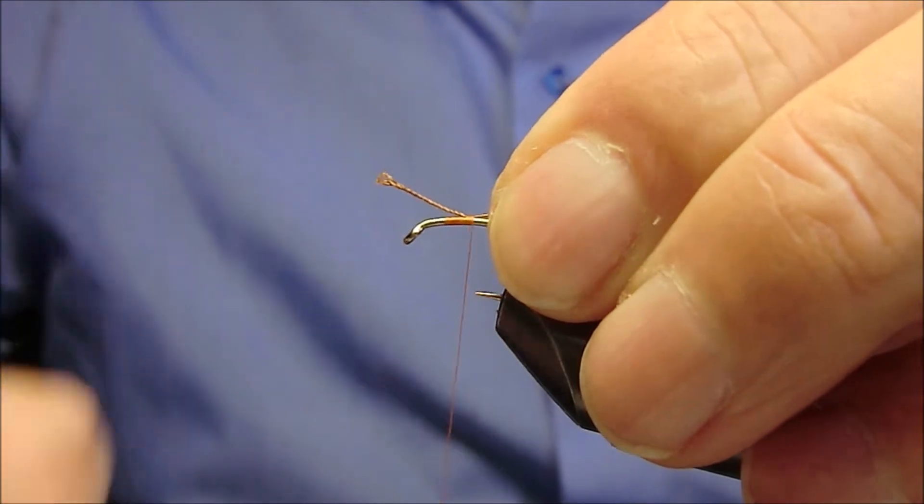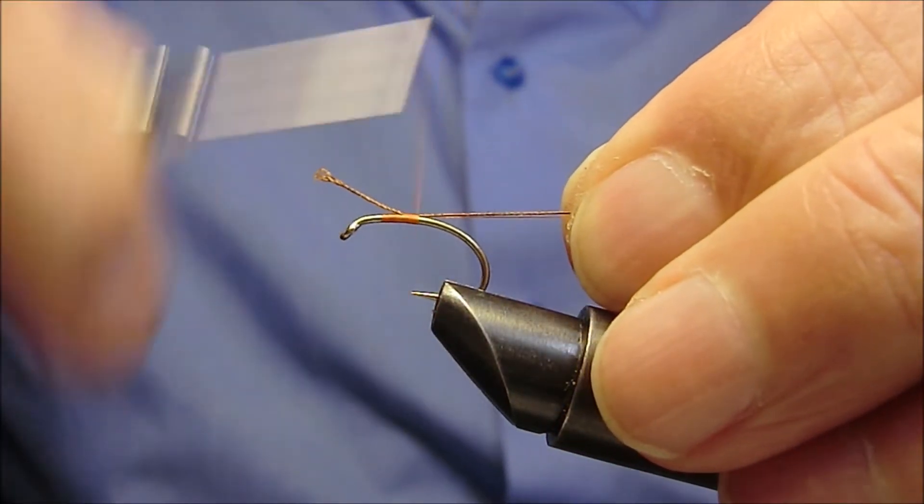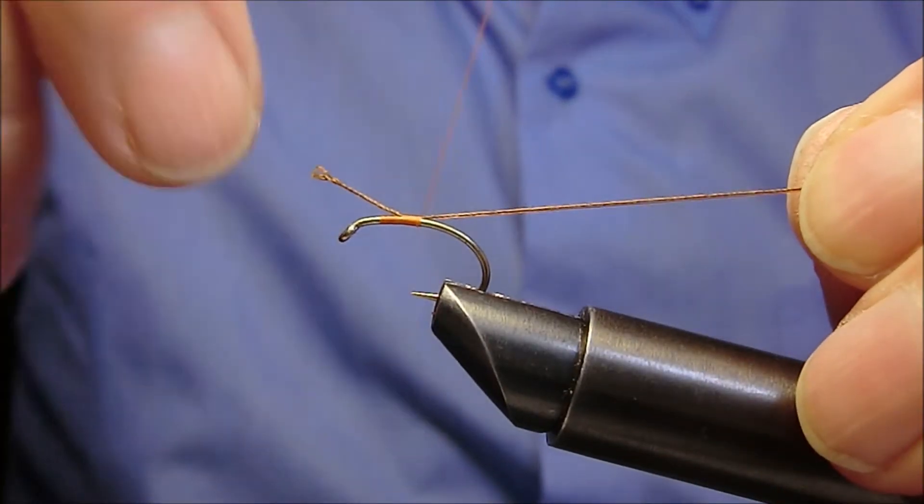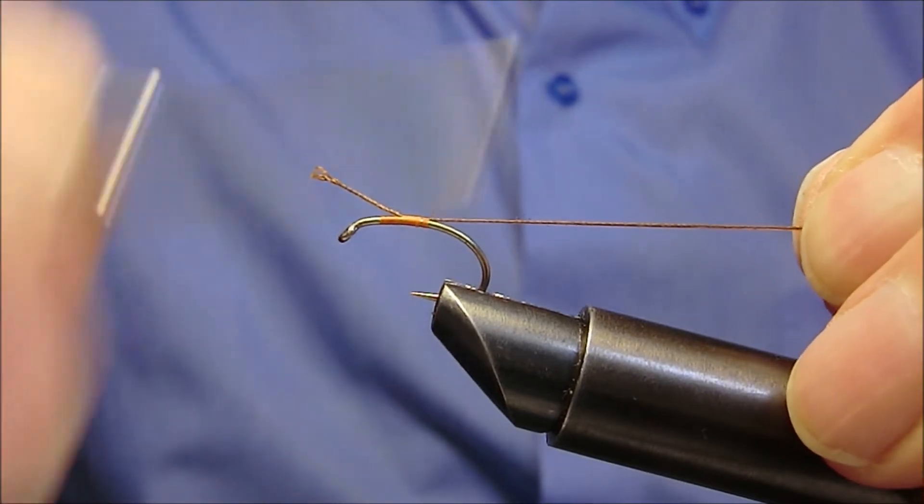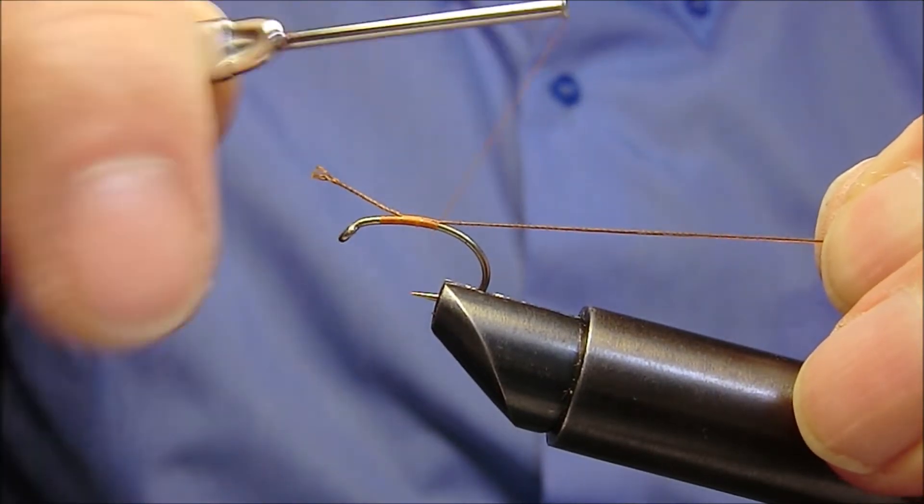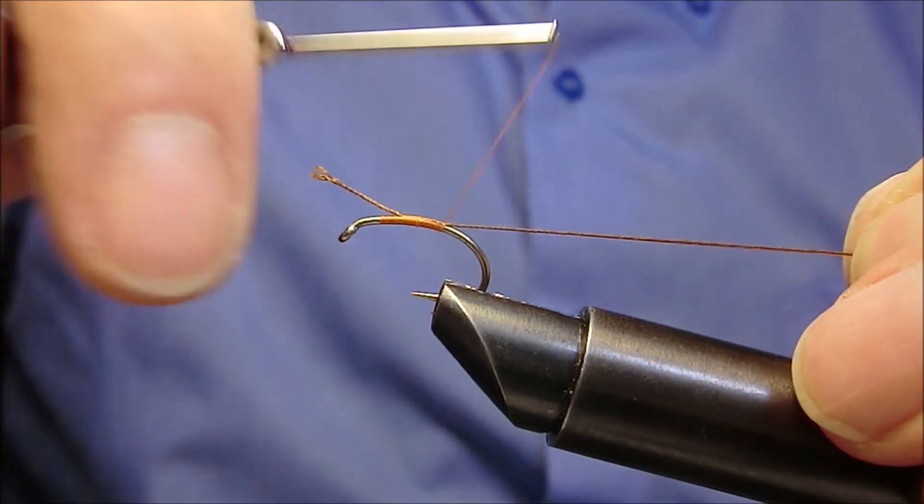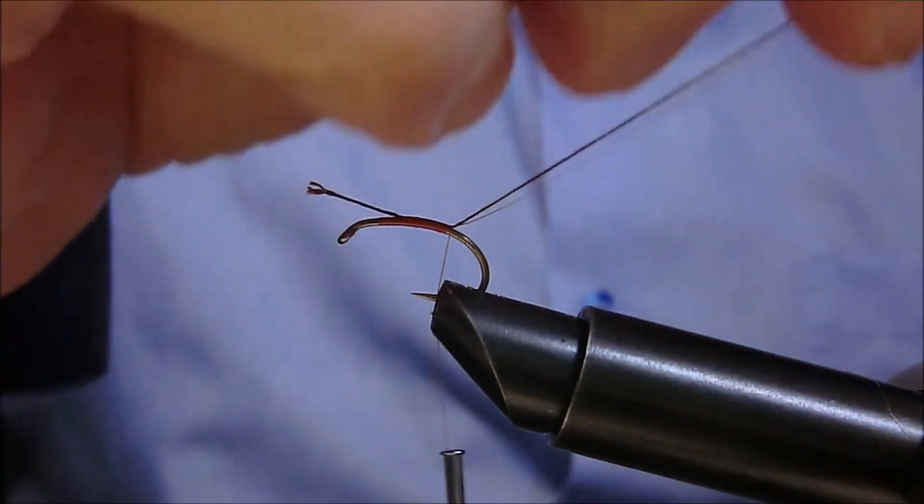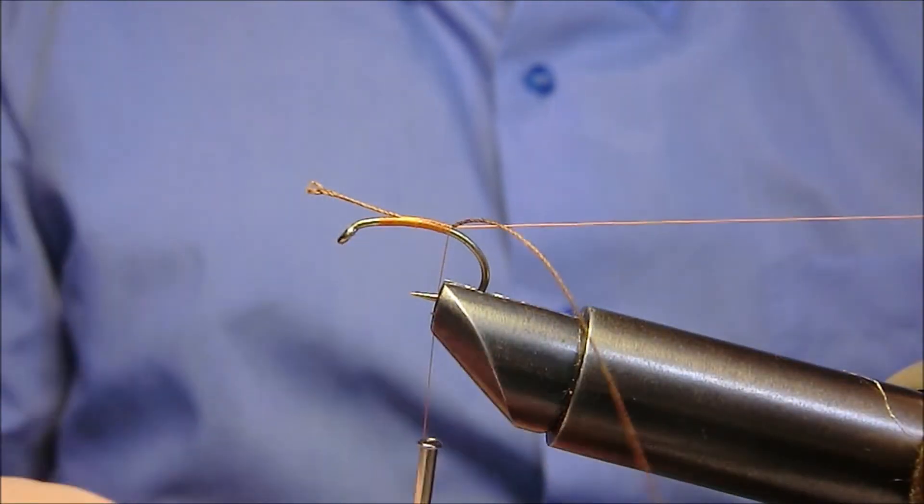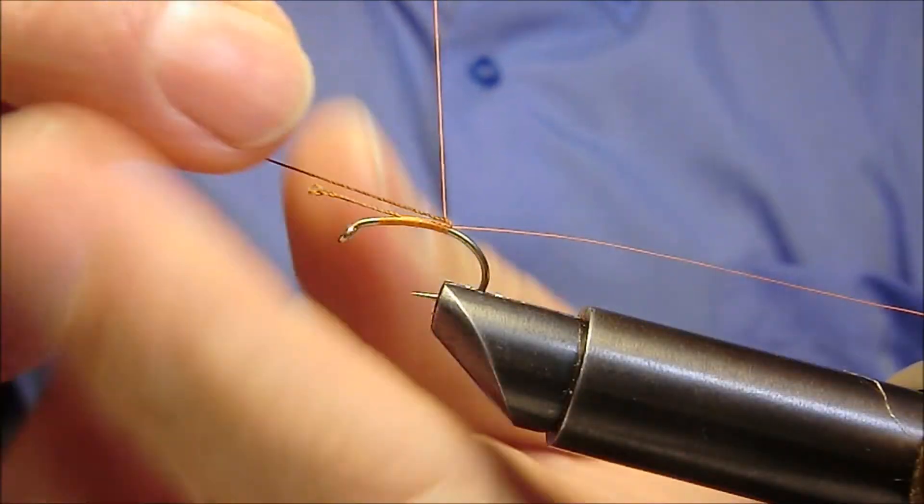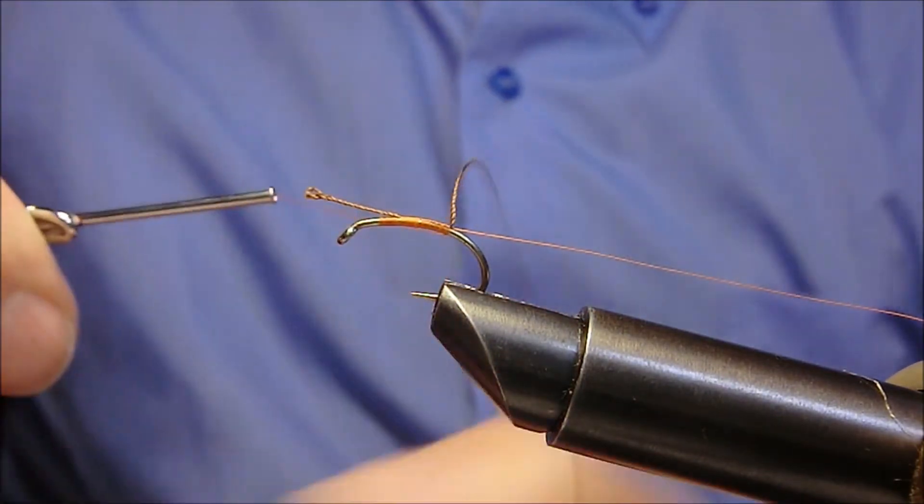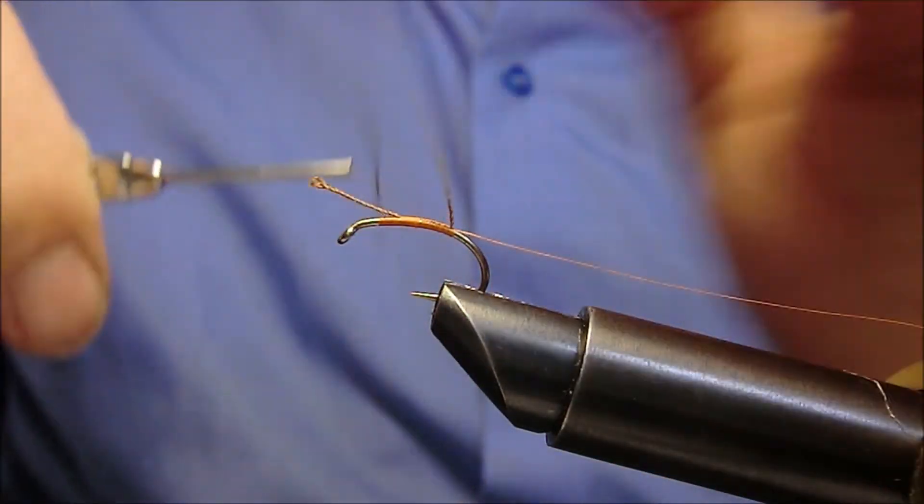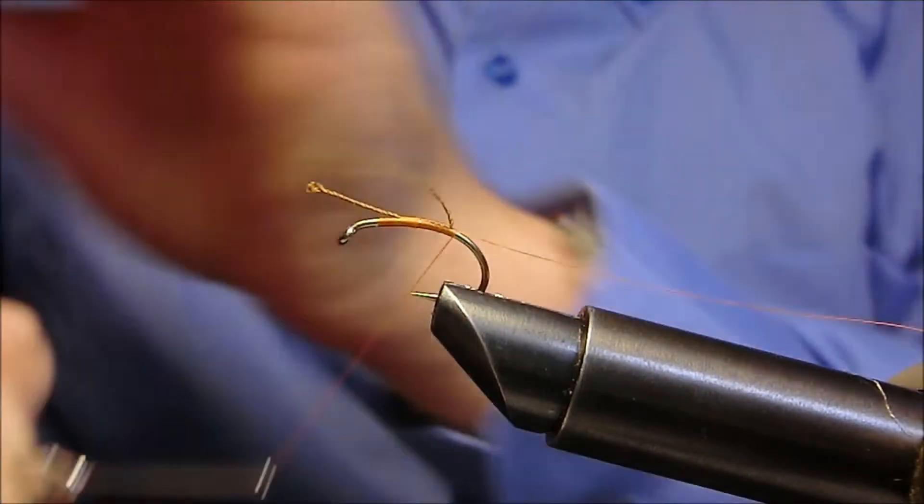Andiamo ora a scendere con il tutto in modo uniforme verso la curvatura. Ora portiamo in avanti il filo di seta marrone e continuiamo ad avvolgere in modo uniforme verso la curvatura, operazione un pochino più antipatica ma fattibile.